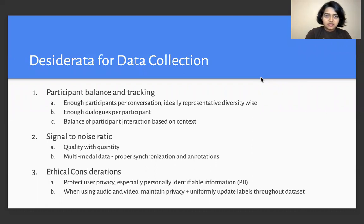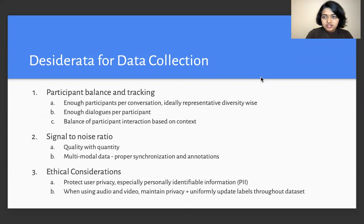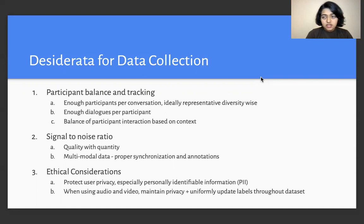From our study of the corpora and data collection methods, we identified three main areas which require attention. The first is participant balance and tracking. For multi-party corpora, there needs to be enough participants per conversation, ideally representative of the diversity of the group, and there needs to be enough dialogues per participant to be able to model them. There also needs to be a balance of participation and interaction based on the context of the conversation.